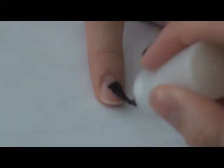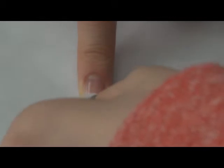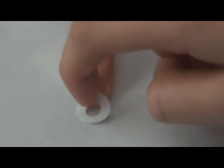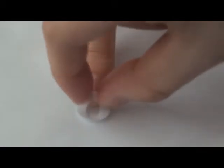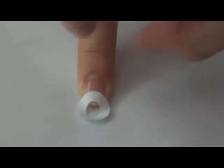Start off with a base coat. On your fourth finger, place a paper reinforcement or tape cut into a semicircle on the tip of your nail. This will help you create your neckline.